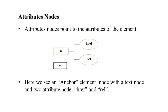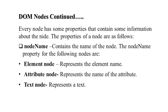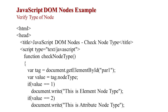For example, looking at attribute nodes: an anchor element 'A' has two attributes — href and rel (relation). The attribute nodes point to the attribute of the element only. Every node has properties containing information about it. Node name refers to the name of the node — for an element node it represents the element name, for an attribute node it is the attribute name, and for a text node it represents the text itself.